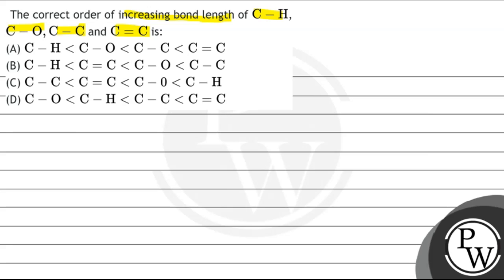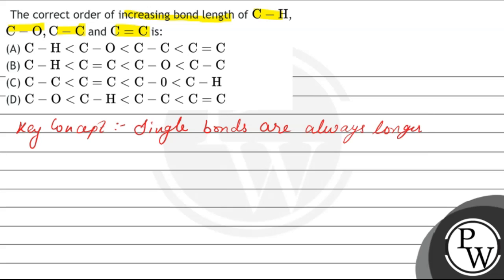The key concept of this question is that single bonds are always longer than double bonds. So, carbon-carbon single bond is greater than carbon-carbon double bond.